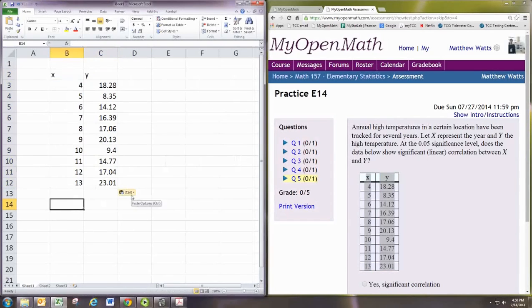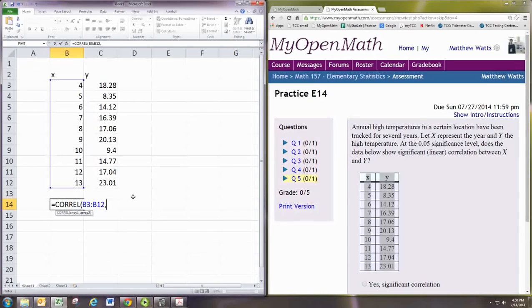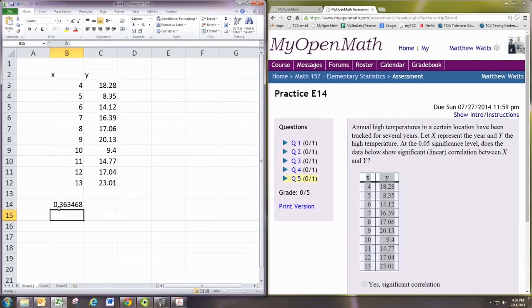use the Corel function, select the X values, comma, then the Y values, close parentheses to get the correlation coefficient.